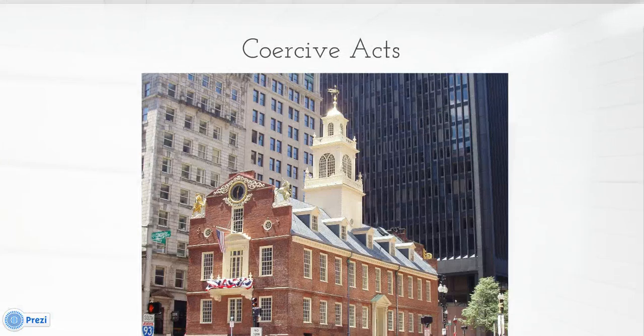Now the big effect of the Boston Tea Party is that England was appalled at this flagrant display of disobedience by the colonies. They passed their harshest acts yet, known as the Coercive Acts, which took away the colonial Massachusetts government. The picture here is of the old state house in Boston — meaning the Massachusetts government that met here couldn't meet here anymore — and they put the colony of Massachusetts under British Army rule.